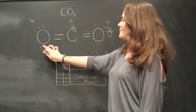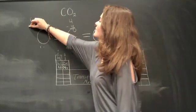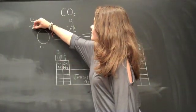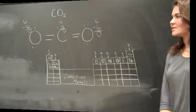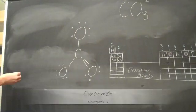And on this side, one, two, three, four, five, six. So the formal charge for oxygen on this side is also zero. So we're going to add up the formal charge the same way we did last time.